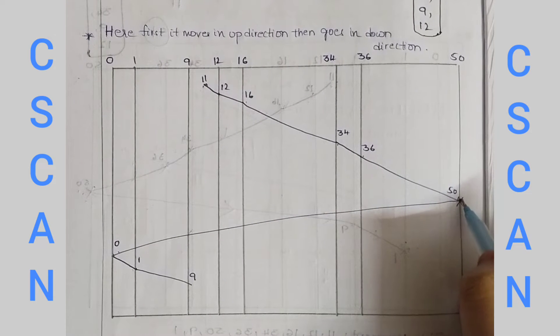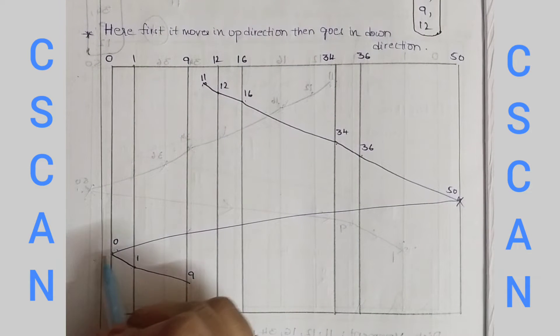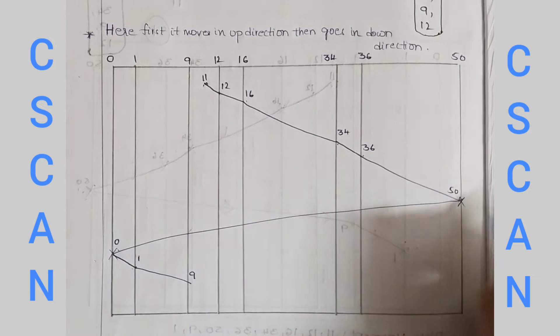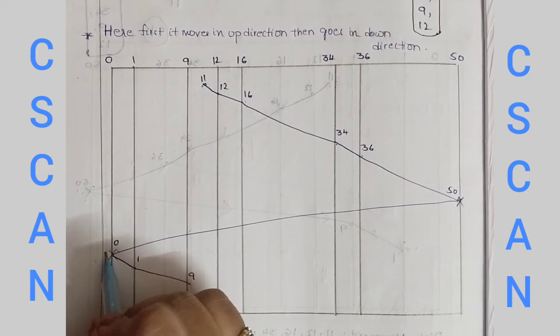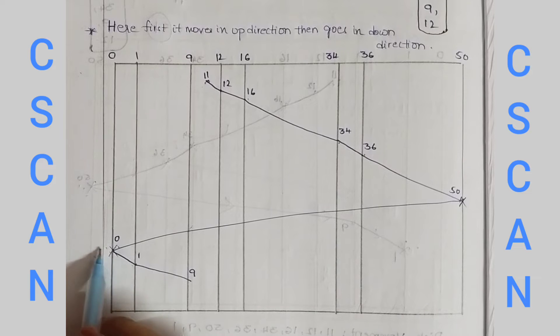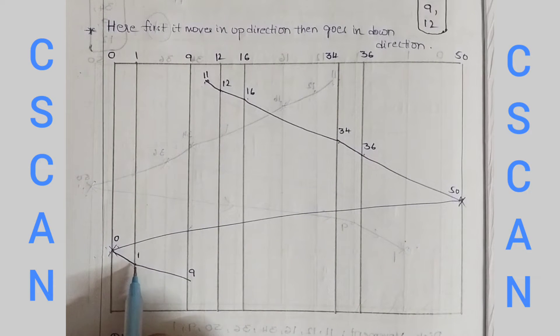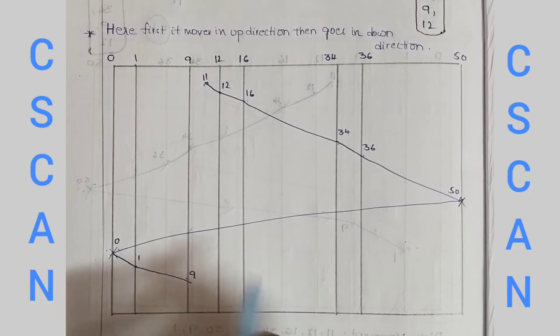Now we have down direction. Down direction we have to direct to 0. We have to do this end. Then we have to move up direction. This time of direction to the remaining 1 to 9.